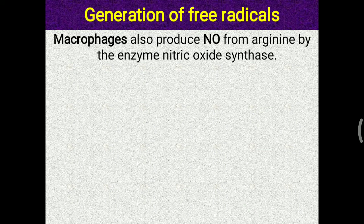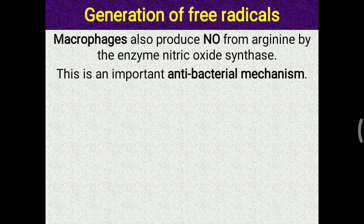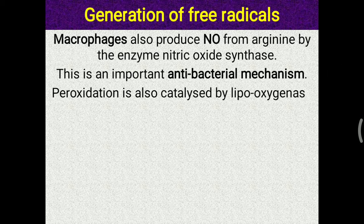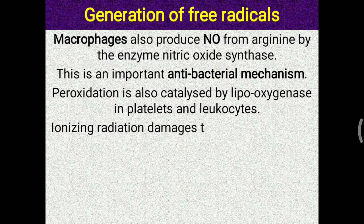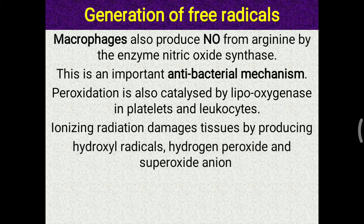Macrophages also produce nitric oxide from arginine via the enzyme nitric oxide synthase, which is an important antibacterial mechanism. Lipid peroxidation is also catalyzed by lipoxygenase in platelets and leukocytes. Ionizing radiation damages tissue by producing hydroxyl radical, hydrogen peroxide, and superoxide anion — ionizing radiation is another reason for free radical generation in the body.